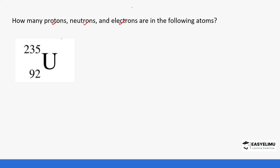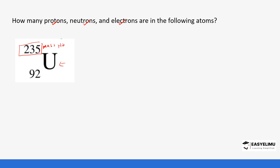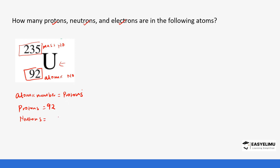We start with uranium. You don't have to remember this element at this level. The mass number is on the top left side and the atomic number is on the bottom left side. The atomic number is the same as the number of protons, so uranium has 92 protons. To find the number of neutrons, we take the mass number, which is 235, and subtract the atomic number, 92. So 235 minus 92 gives us 143 neutrons.